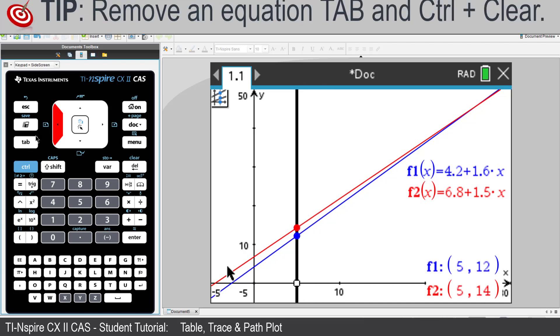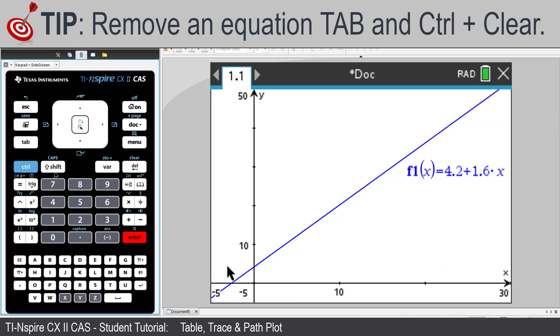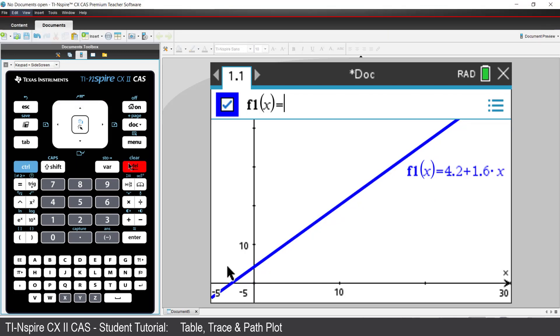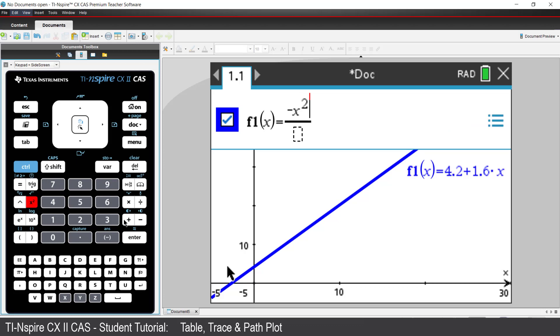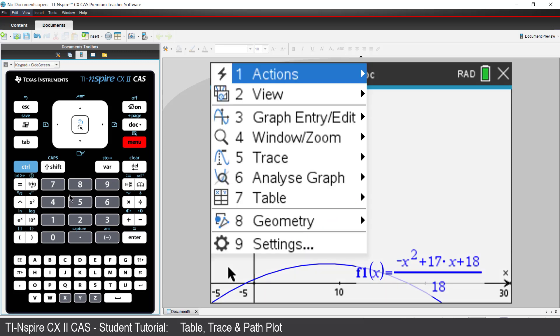Now let's move away from taxi fares and consider a projectile. Suppose the projectile has the equation negative x squared plus 17x plus 18, all over 18. The projectile's path is in the first quadrant.